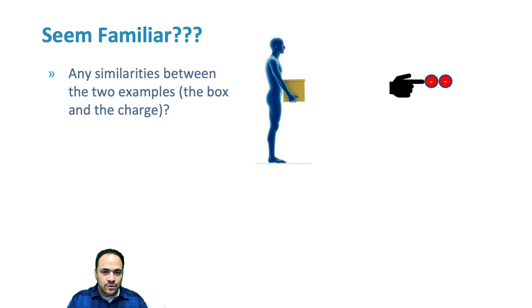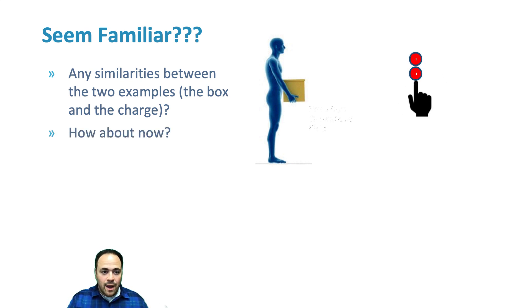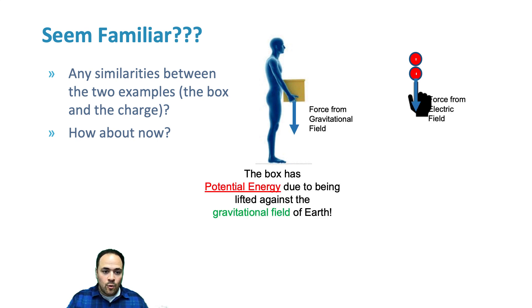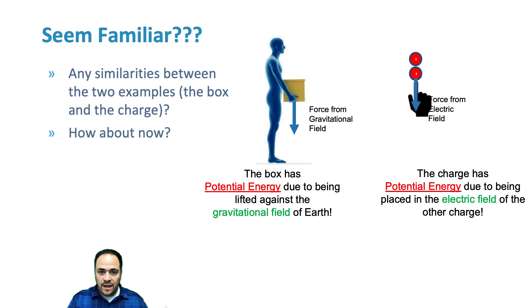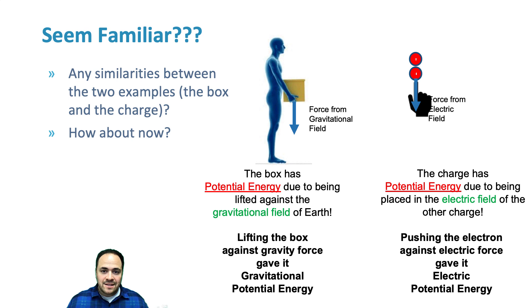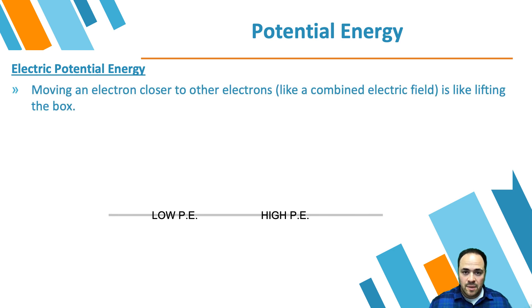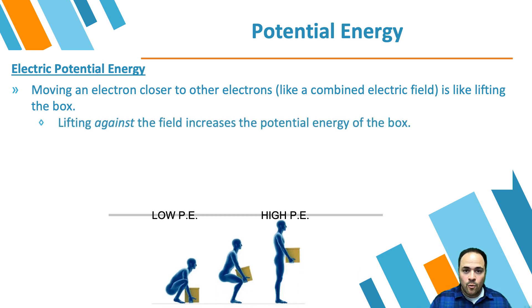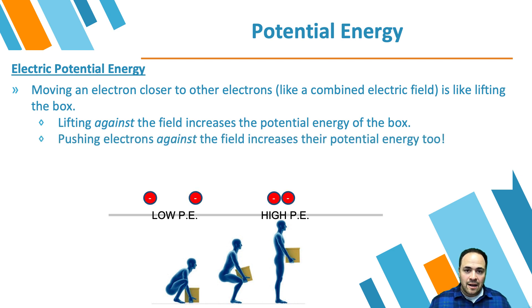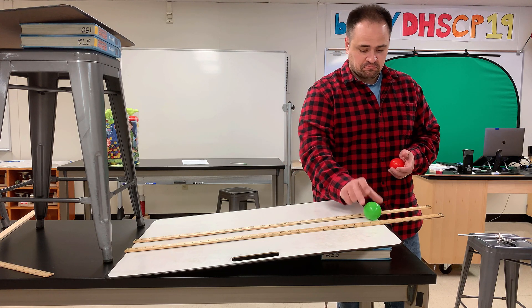Hopefully all these examples seem related, because we can think about them the same way. In all these cases we're working against a field, and when we work against a field we store potential energy. When we lift a box against Earth's gravitational field, we give it gravitational potential energy. Likewise, when we work against an electric field — pushing electrons closer together — we store electric potential energy in those electrons.